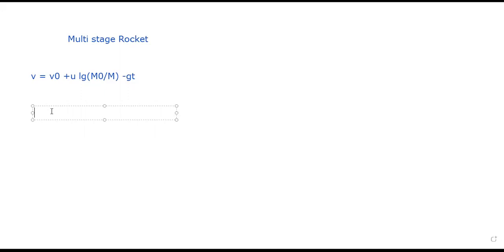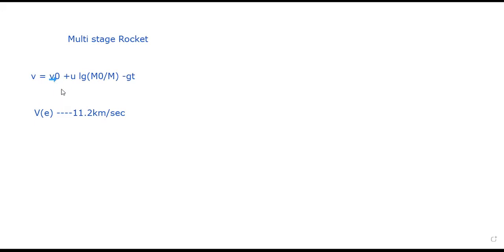The escape velocity is approximately 11.2 km per second. The rocket must attain this velocity to enter space by overcoming Earth's gravitational force. Initially, we give the rocket some velocity v-naught. The question is whether this initial velocity is directly equal to 11.2 km/s, or whether the rocket will attain 11.2 km/s only after reaching some height.